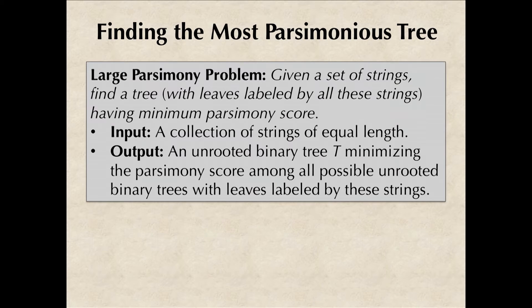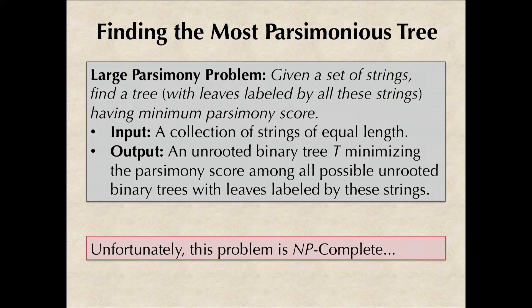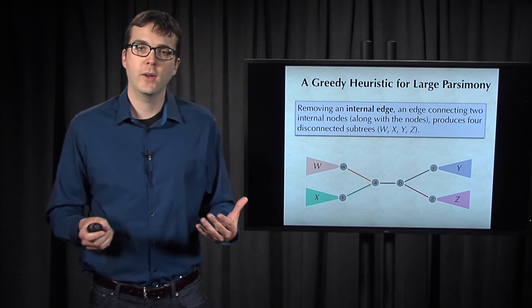So this brings us to the large parsimony problem, in which we must find an assignment of ancestral states to internal nodes over all possible unrooted binary tree structures. As you might guess, this problem is NP-complete. So let's design a greedy heuristic for this problem.